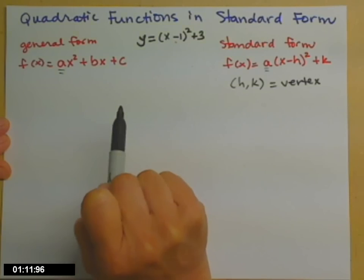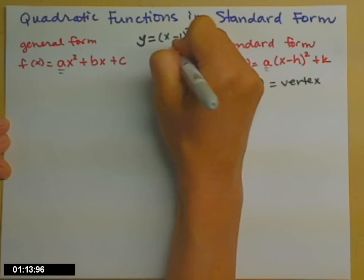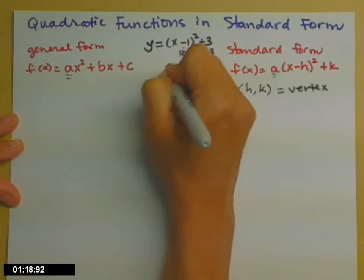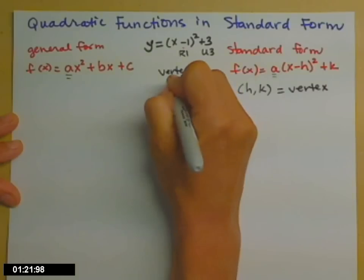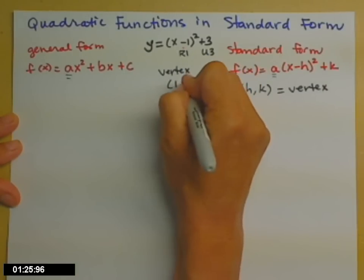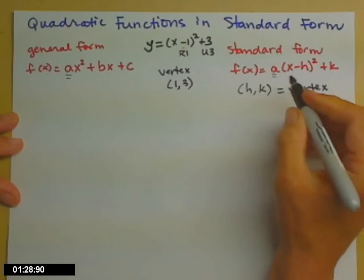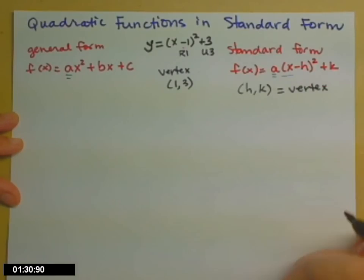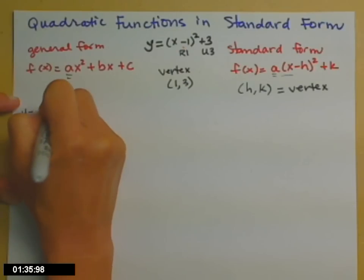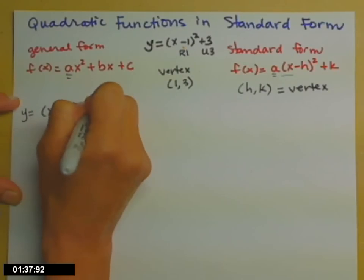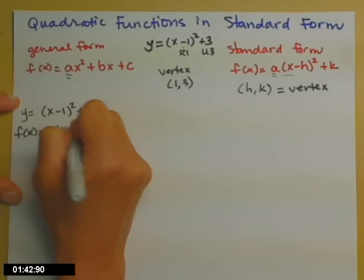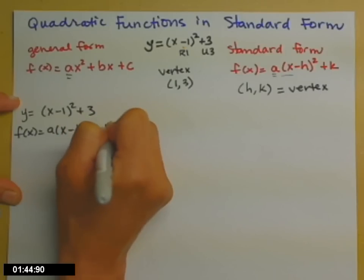So let's think about it here with that example I just gave you. We moved that parabola right 1 and then up 3. So the vertex for that parabola, without even sketching it, I know to be positive 1 in the x direction, positive 3 in the y direction. So let's compare that to this standard form of the parabola. So y equals x minus 1 squared plus 3. And then I'll write f of x equals a times x minus h squared plus k below it.